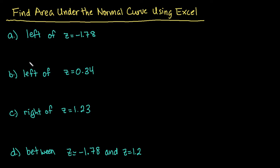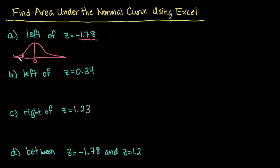So remember with Z-scores: Z-scores just tell you on a number line how many standard deviations above or below the mean in the standard normal distribution. Remember that in the standard normal distribution it's centered at zero and typically we go out three standard deviations in each direction. So negative 1.78 would be to the left, almost two standard deviations below the mean, so you're not going to have a whole lot of area for this one. We're trying to find the cumulative area from negative infinity to negative 1.78 in the standard normal curve.